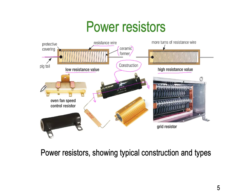Resistors also come in a ceramic box with tabs at either end giving the full resistance value, and a tapped-off terminal in the middle giving a second resistance value. By connecting across different terminals you get different resistance values. This construction is used as a fan speed controller — putting resistance in the path of the fan causes a voltage drop which reduces the fan speed.